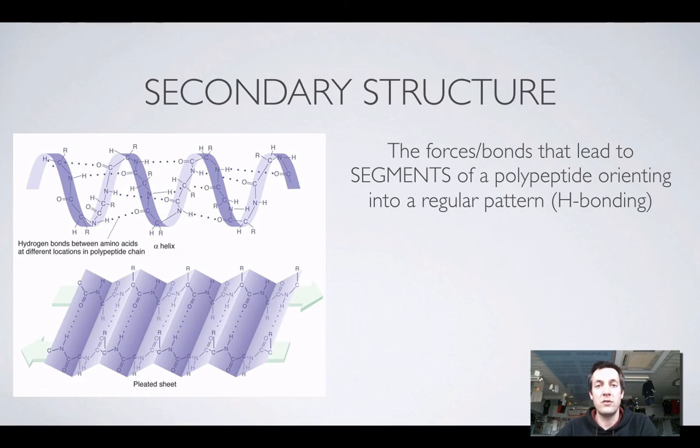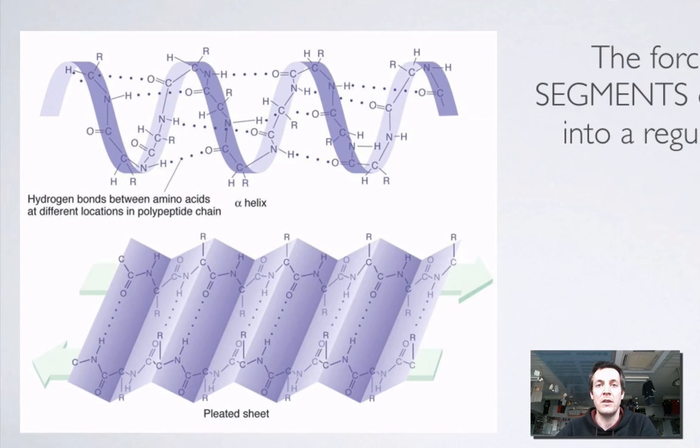Next, we could talk about the secondary structure of a protein. And this is when you've got a polypeptide chain with all your amino acids joined together and the way that parts of that chain can interact with each other, and specifically the hydrogen bonding that occurs between the amide groups in that chain. So it's the forces and bonds that lead to segments of a polypeptide orienting into a regular pattern. But these are specifically the hydrogen bonds between amide groups.